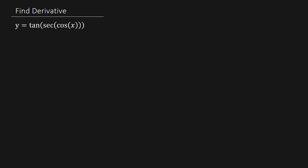What's going on? Got another math video here for you. This should be a little quick one. We are going to find the derivative of this function right here. So we got y equals tangent of secant of cosine x. So let's find the derivative.